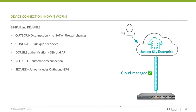A little bit about device connectivity — it's very simple and reliable. The device itself provides an outbound connection. So if you're providing a service that sits behind some type of edge device, maybe a customer edge firewall, that doesn't allow inbound access, this device makes a phone home to Sky Enterprise and now you can configure, see your configuration, make configuration changes, have backups of your configuration, and even Junos CLI functionality via Sky Enterprise. The configlet is unique per device. We provide double authentication via SSH and API, very reliable with automatic reconnections, and this connection is secured using outbound SSH.